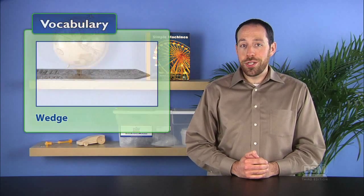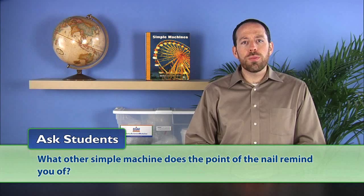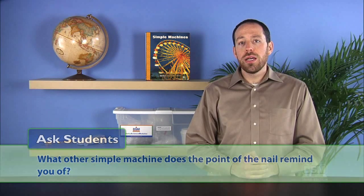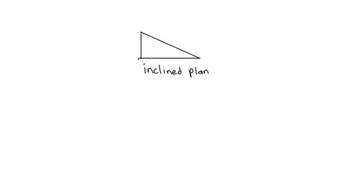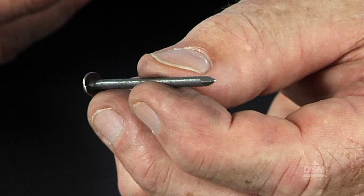Explain that the point of a nail is a kind of simple machine called a wedge. Ask students, what other simple machine does the point of a nail remind you of? The point of a nail should remind students of an inclined plane. Draw an inclined plane and a wedge on the board and show the students how a wedge can be thought of as two inclined planes placed back to back. Point out that the nail is actually made up of four inclined planes that form a wedge at the end of the nail.